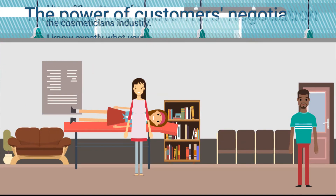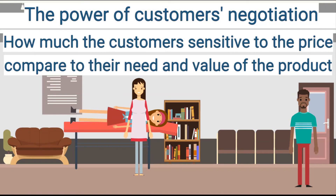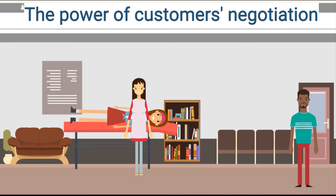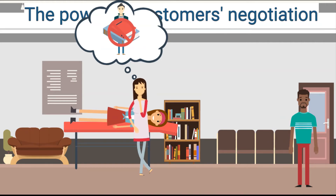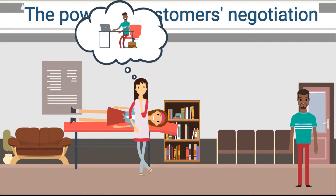The fourth factor is the power of customers' negotiation. If you try to compete with every web builder in the industry, the customer's power of negotiation is high. However, when you are an expert in one field, their power is reduced. They can hire your competitors' services, but because those competitors lack knowledge of cosmeticians, customer behavior and perception, they would definitely do a worse job than you.